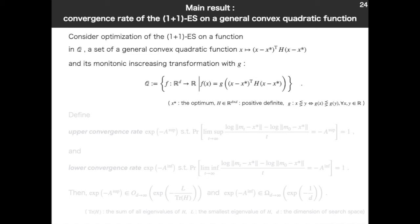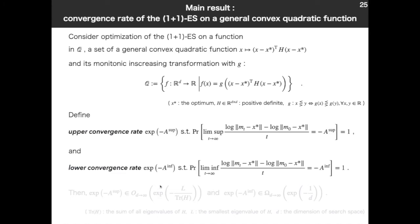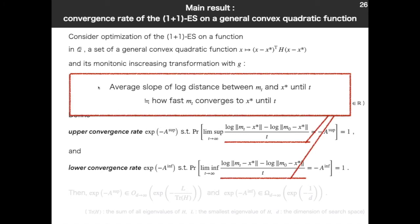And we formally define here upper-convergence rate exp(-a_sup) and lower-convergence rate a_inf. a_sup and a_inf satisfies the following equalities, respectively. These two equalities both argue that some probability is 1. Let's see inside. These two terms are the same. And, as you see, this is the average slope of log distance between m_t and x* or mean and the optimum until t. So this indicates how fast m_t converges to the optimum until t. And in the above, we take supremum and in the below, we take infimum. And, the limit as t to infinity is minus a_sup or minus a_inf, respectively. The reason we take exponential is just a custom in the field of theoretical analysis of optimization algorithms.